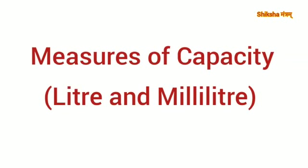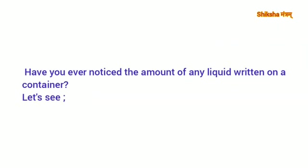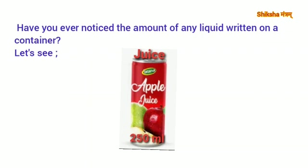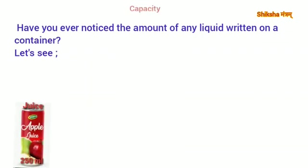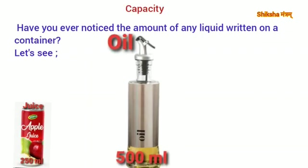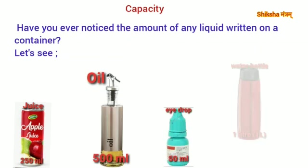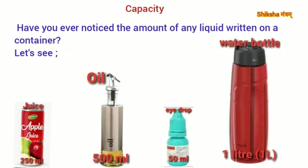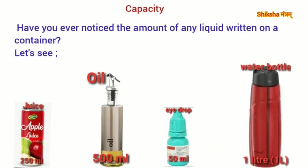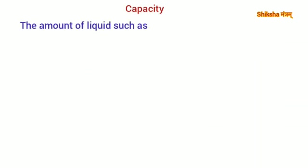Measures of capacity: liter and milliliter. Have you ever noticed the amount of any liquid written on a container? Apple juice: 250 ml, oil: 500 ml, eye drop: 50 ml, water bottle: 1 liter.